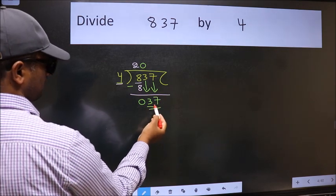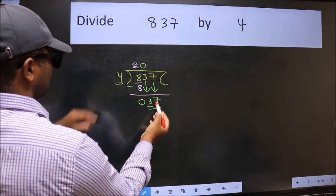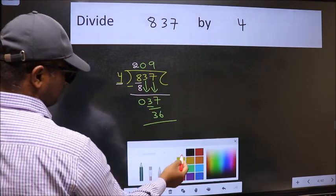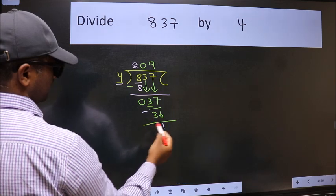Now 37. A number close to 37 in 4 table is 4 nines 36. Now we should subtract. We get 1.